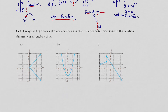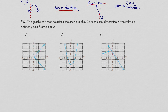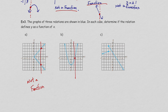Now we have graphs and want to see if they are functions using the vertical line test. For graph A: draw a vertical line anywhere — it meets two points, so it is not a function. For graph B: draw a vertical line anywhere — it meets only one point — but drawing a vertical line at a certain location gives two points, so it is not a function either.